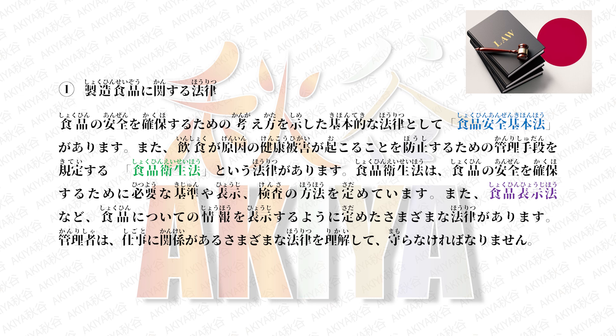1.製造食品に関する法律。食品の安全を確保するための考え方を示した基本的な法律として食品安全基本法があります。また飲食が原因の健康被害が起こることを防止するための管理手段を規定する食品衛生法という法律があります。食品衛生法は食品の安全を確保するために必要な基準や表示、検査の方法を定めています。また食品表示法など食品についての情報を表示するように定めた様々な法律があります。管理者は仕事に関係がある様々な法律を理解して守らなければなりません。